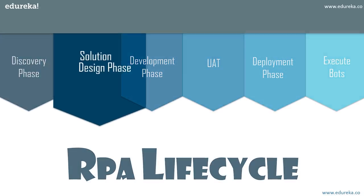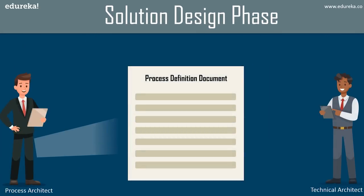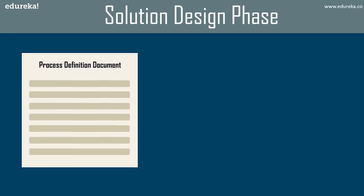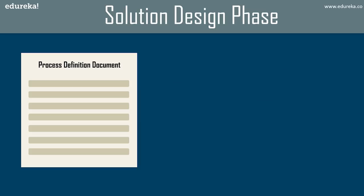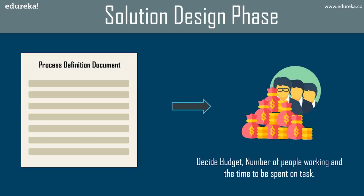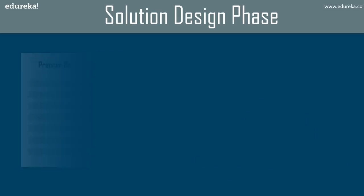Now let's move forward with the next phase — the solution design phase. In this phase, the process architect sits down with the technical architect and both create the process definition document, which contains information about each and every step of the process in depth. The next step is deciding the budget, the number of people working on the project, time to be spent, and what the production environment will be.